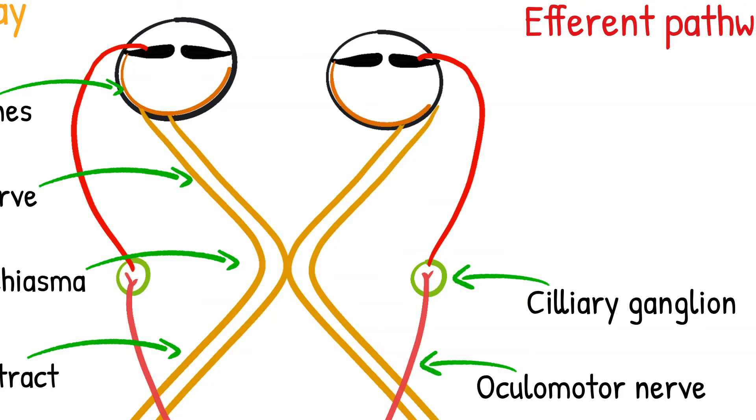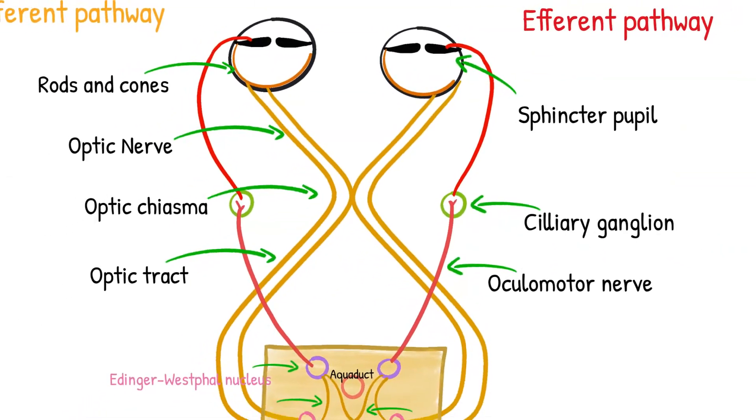Then post-ganglionic myelinated fibers pass through the short ciliary nerves to innervate the sphincter pupillae. Normally, post-ganglionic fibers are non-myelinated and this is the only exception to this rule. These are the parasympathetic fibers.